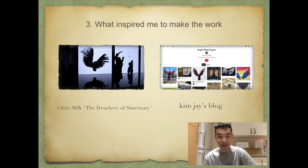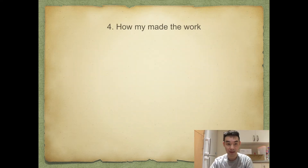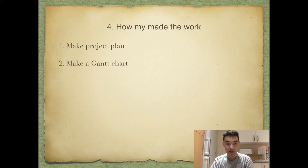A DreamJS blog shows many types of wings, which was very helpful for drawing several different types of wings in my work, including the use of color and the shape of the wings. I wrote all my own ideas and plans in a document, and a Gantt chart was used to urge me to complete each step according to a time schedule. I also self-taught production-related techniques via YouTube.